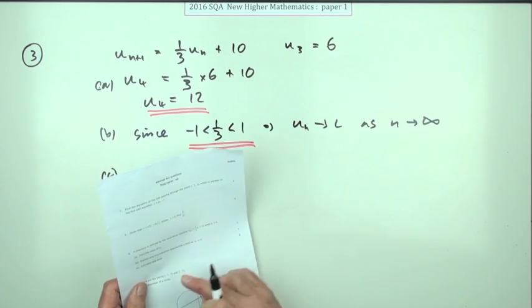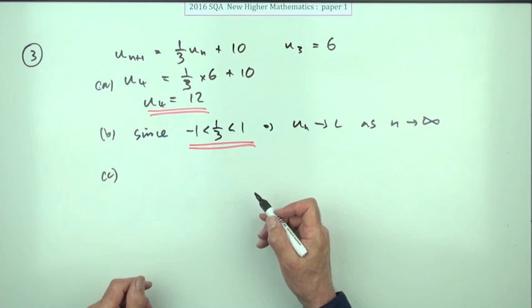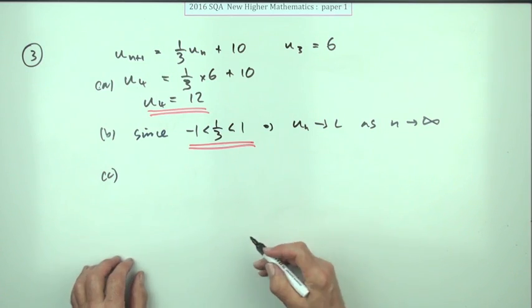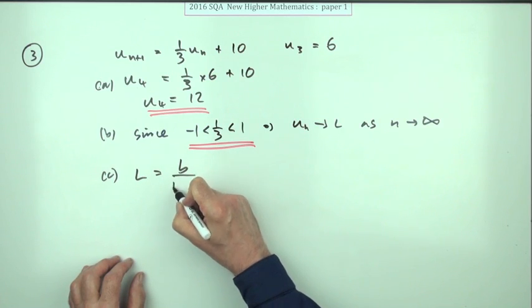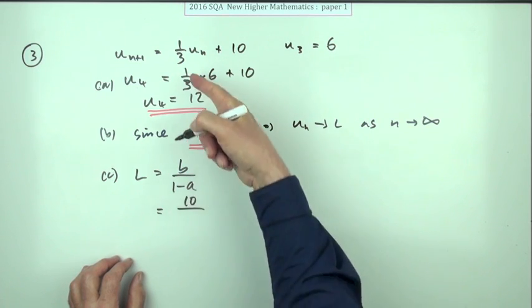And the last part is, for two marks, what is this limit? Well, you could work it out either of the two ways. In the last year of the exam, they had them both down, so you could either just go straight in with the formula, B over 1 minus A, B being the 10, A being the third,